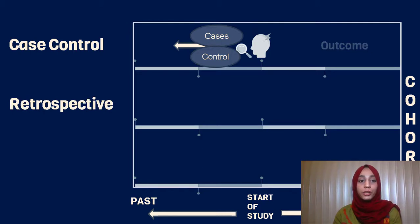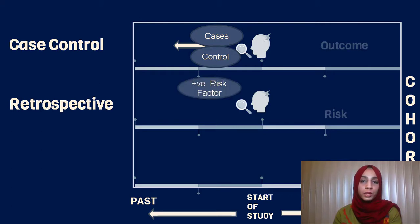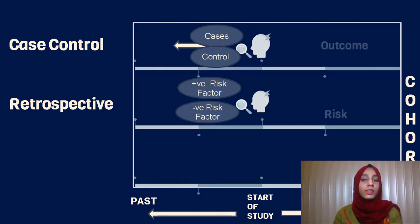In a retrospective cohort study, we start with the risk. We take two groups: one with the positive risk factor, meaning they have been exposed to the risk, and one with the negative risk factor, meaning they have not been exposed to the risk. We go back in time to inspect the history.